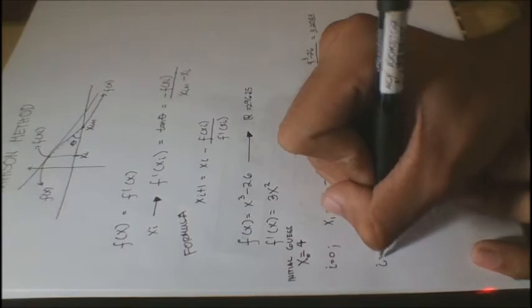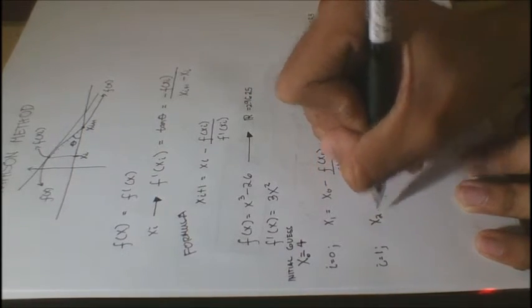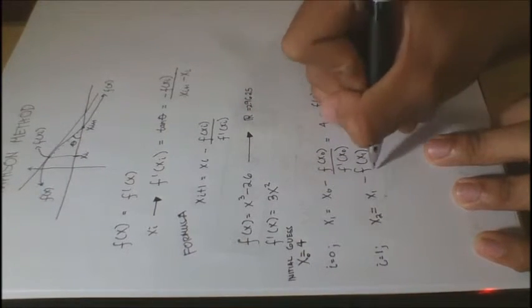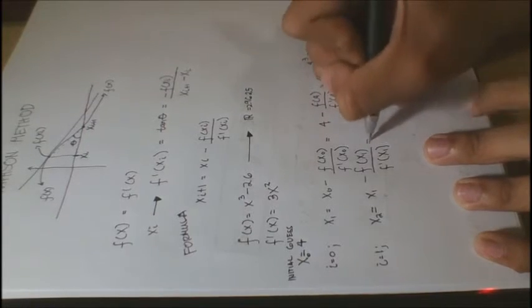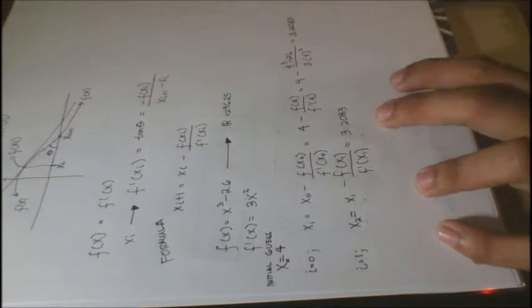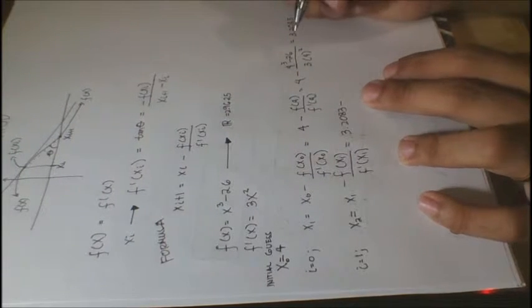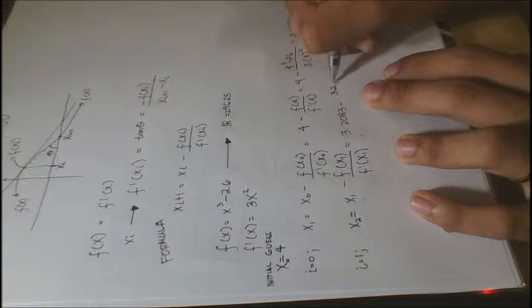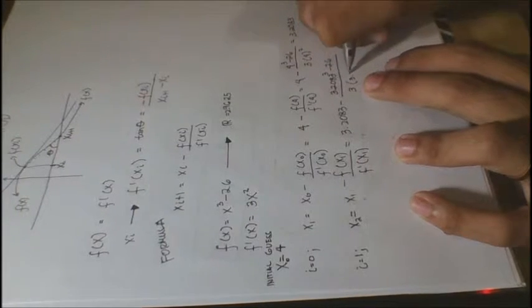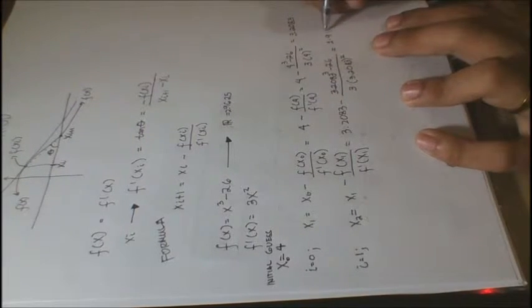Now, for iteration number 2 which is 1, xi will then become x2 equal to x1 minus f of x1 all over f prime of x1. This is equal to 3.2083 minus f of 3.2083, which is 3.2083 cubed minus 26 all over 3 times 3.2083 squared. The answer for that is 2.9808.